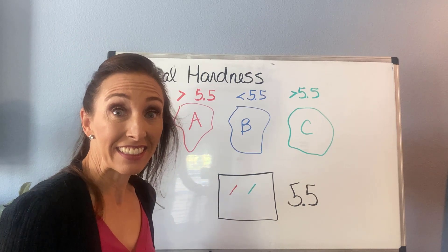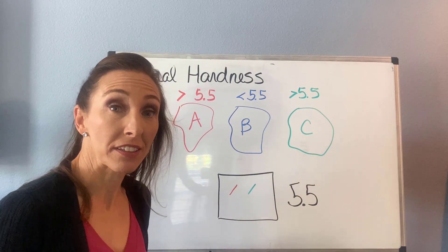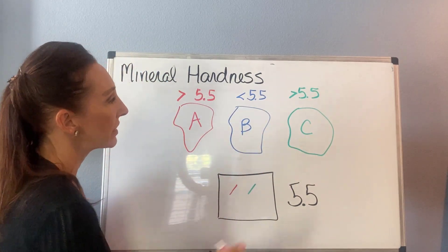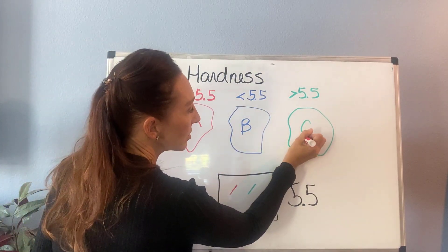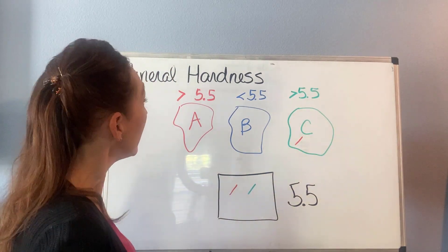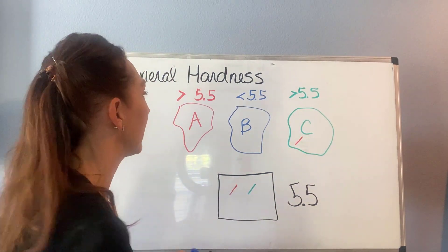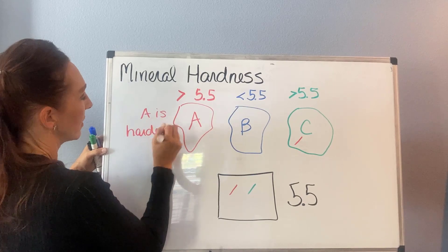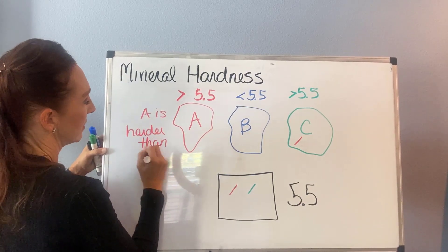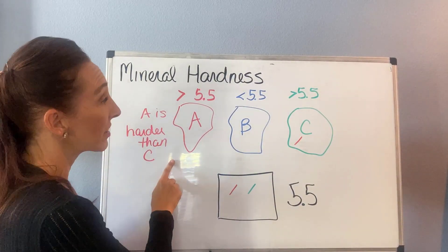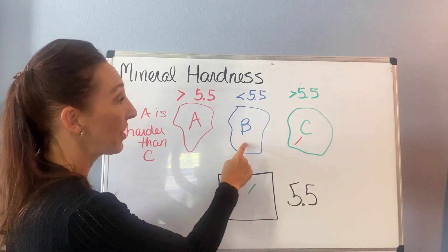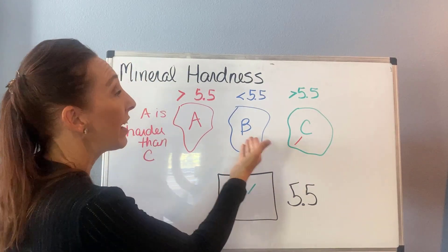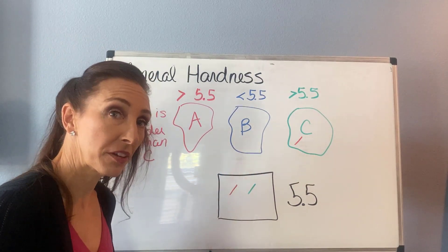Now let's take A and C. What if we need to know their relative hardnesses? We would say, let's see if A scratches C. If A scratches C and leaves a scratch on there, then we can confidently say that A is harder than C. So we can conclude A is the hardest, then C, then B. And A and C are both greater than 5.5 on our scale, while B is less than 5.5.